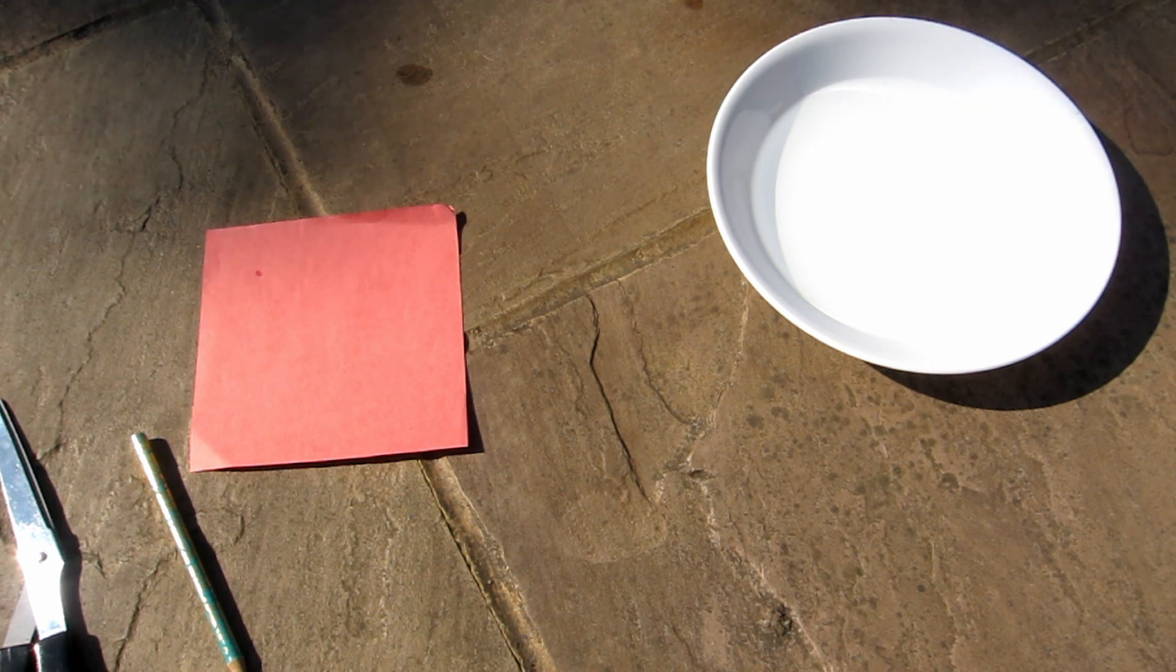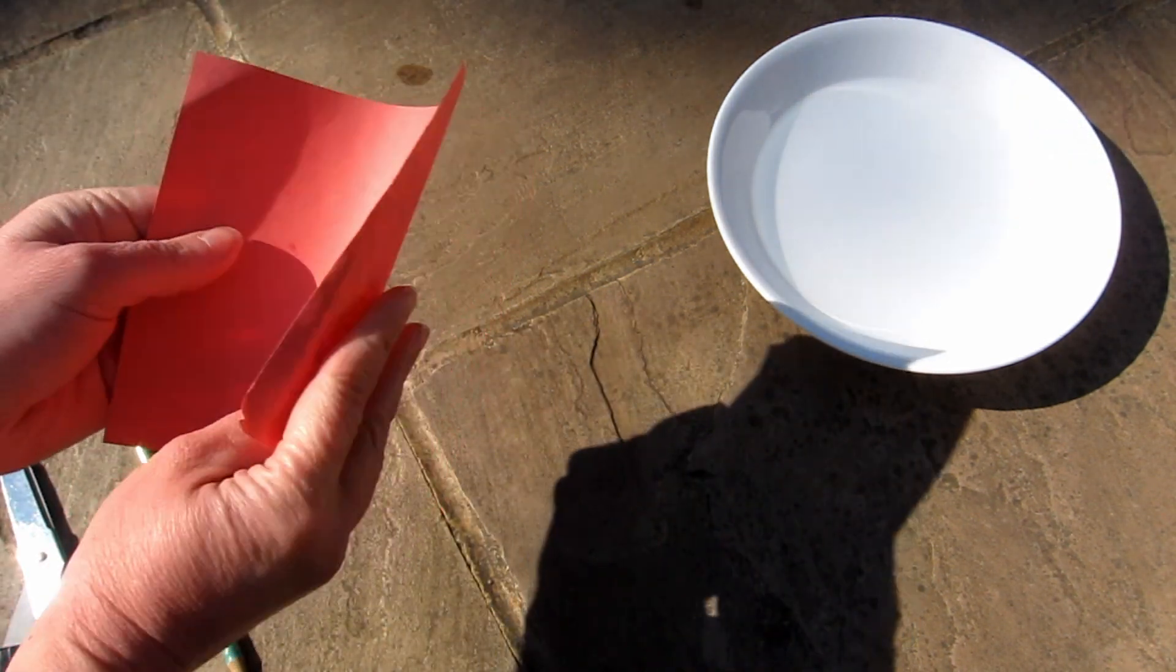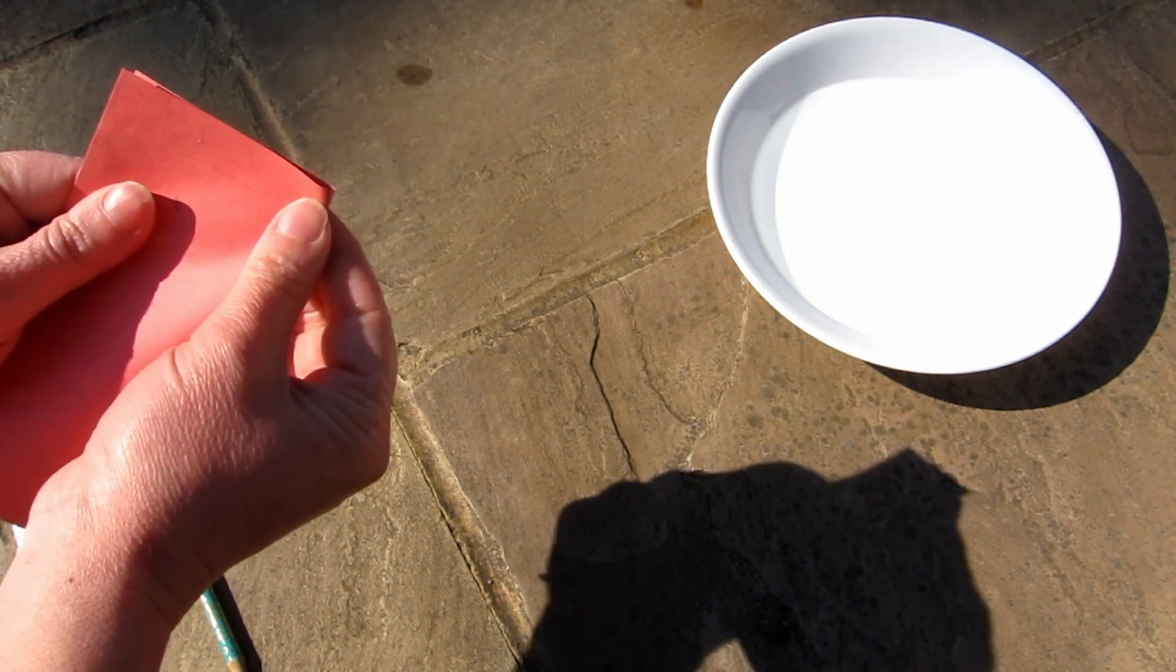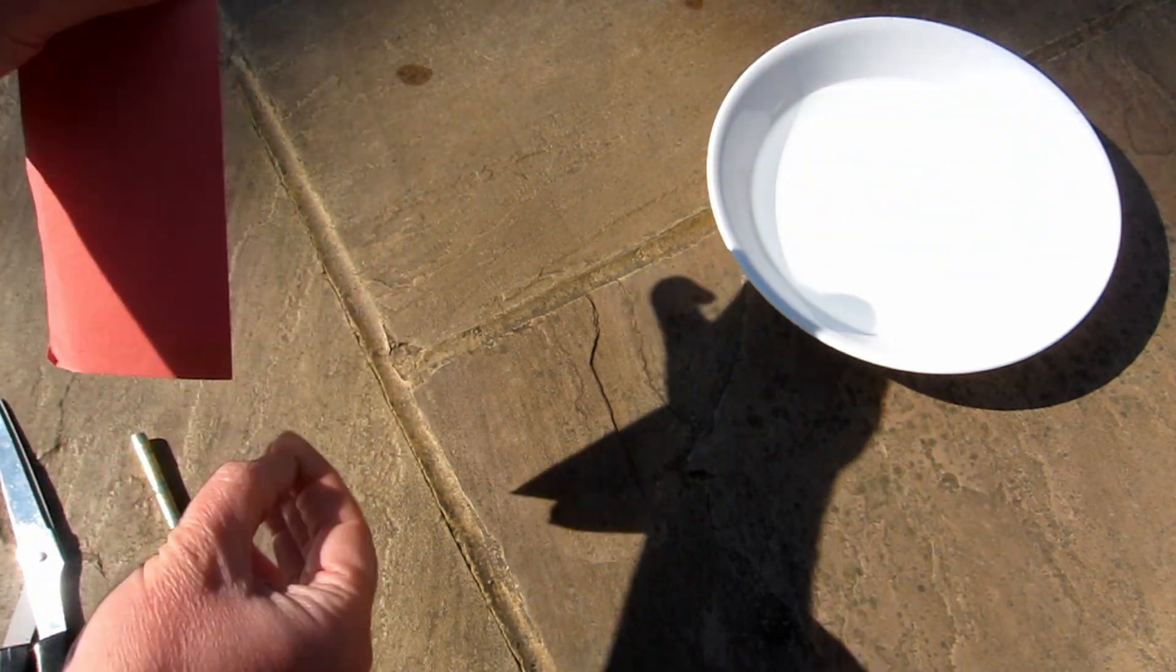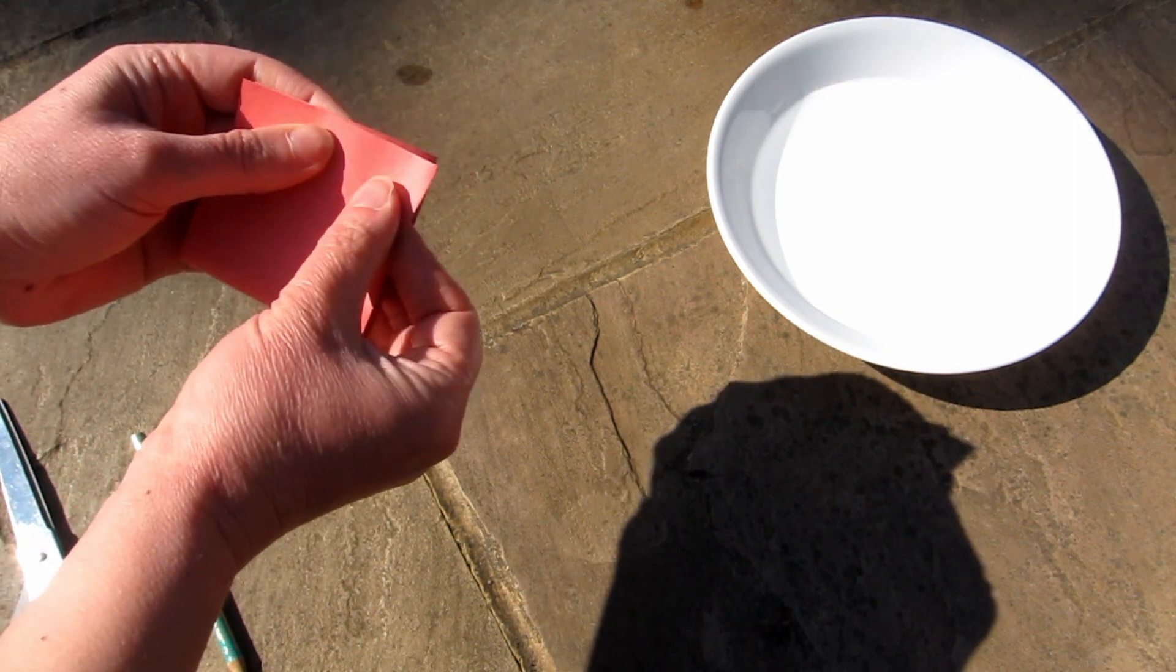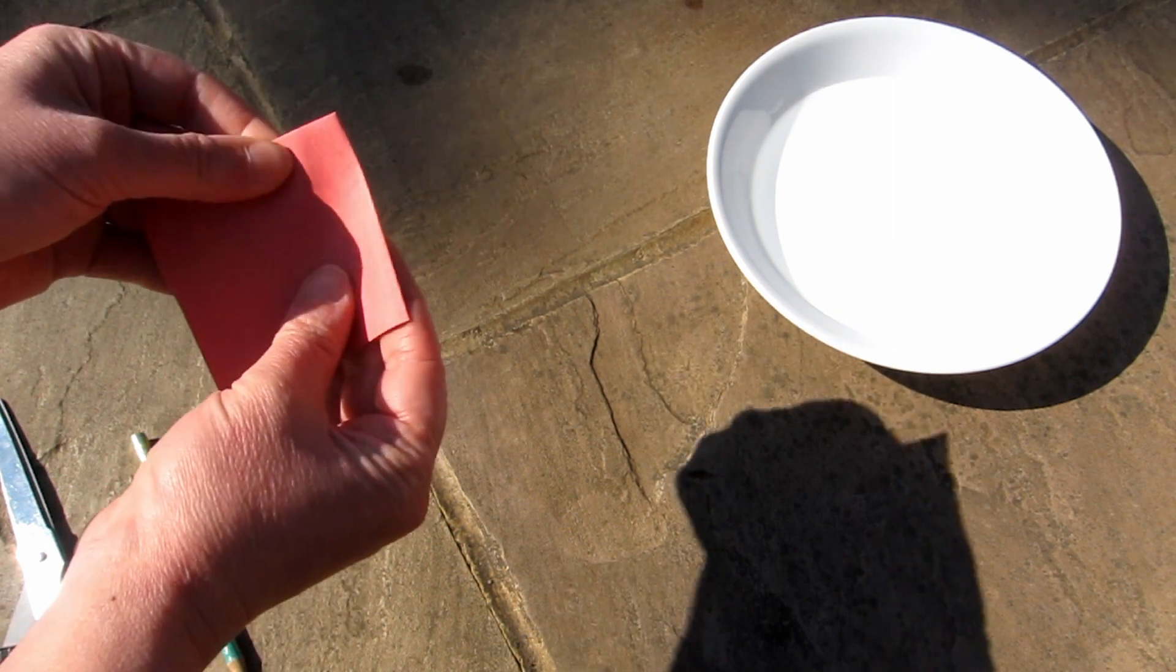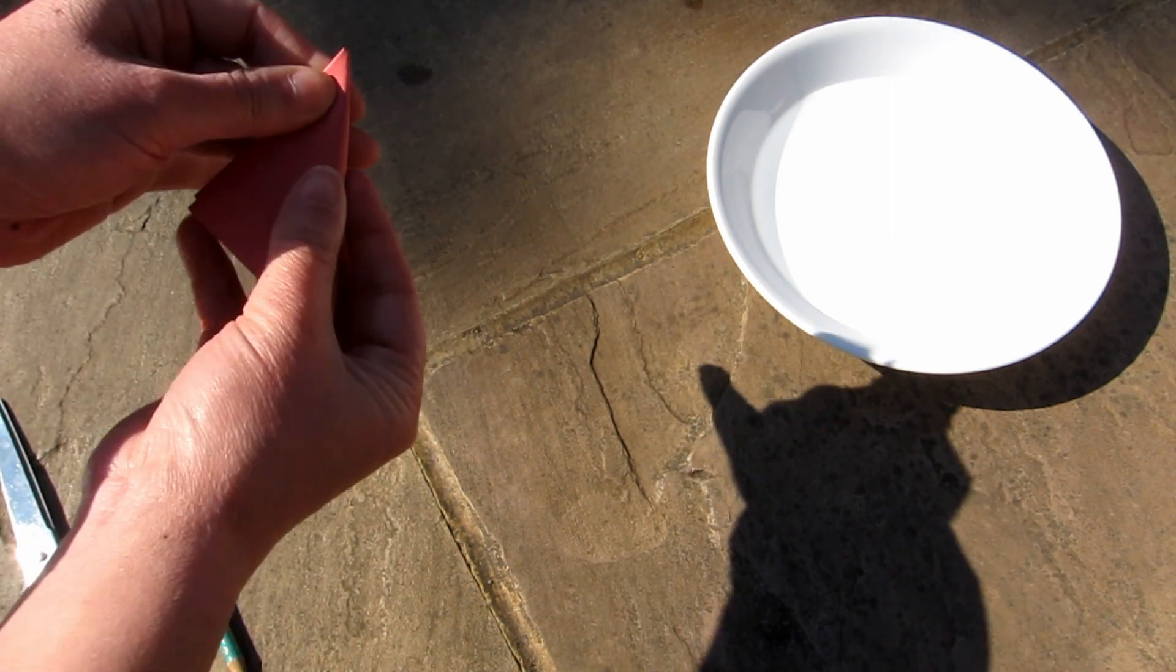Try making a flower with more petals. Take another square. Fold it in half, in half again, and then in half again like this.